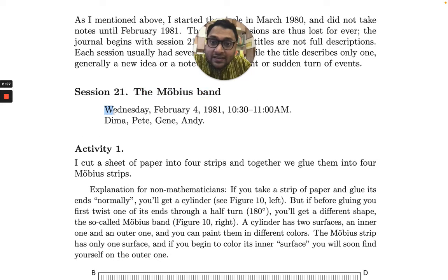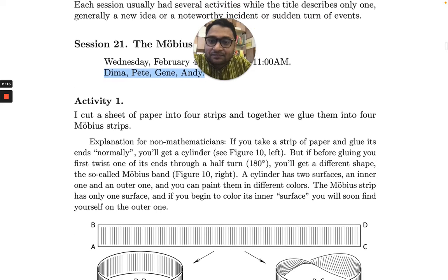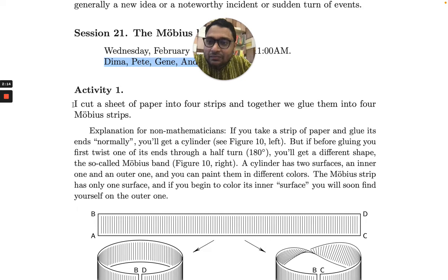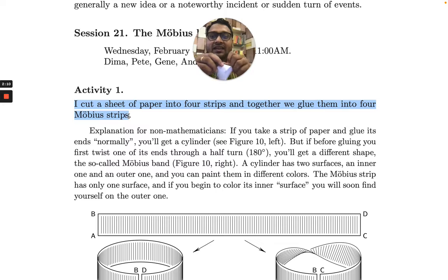It happened on a Wednesday, February 4th, 1981, and it was just a half an hour math circle, and the participants were Dima, Pete, Gene, and Andy. And the person, Zvonkin, says that I cut a sheet of paper into four strips together and we glue them into four Mobius strips.